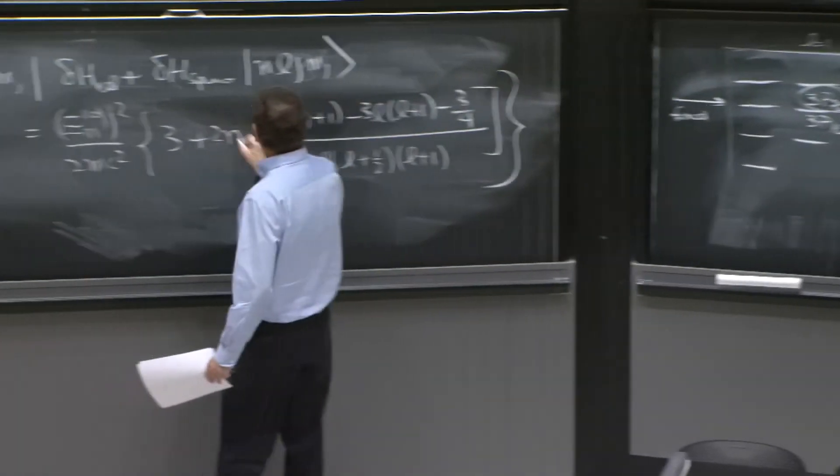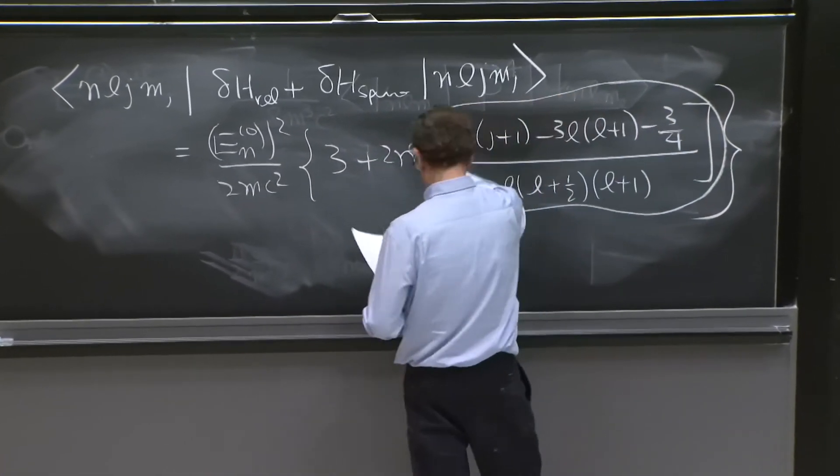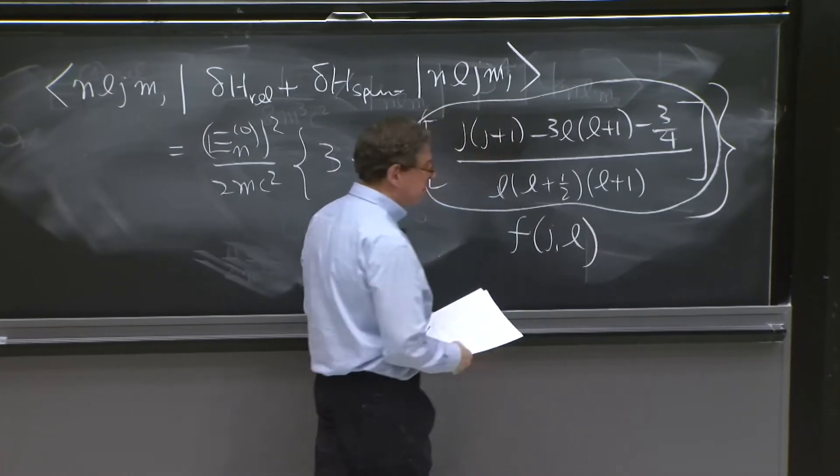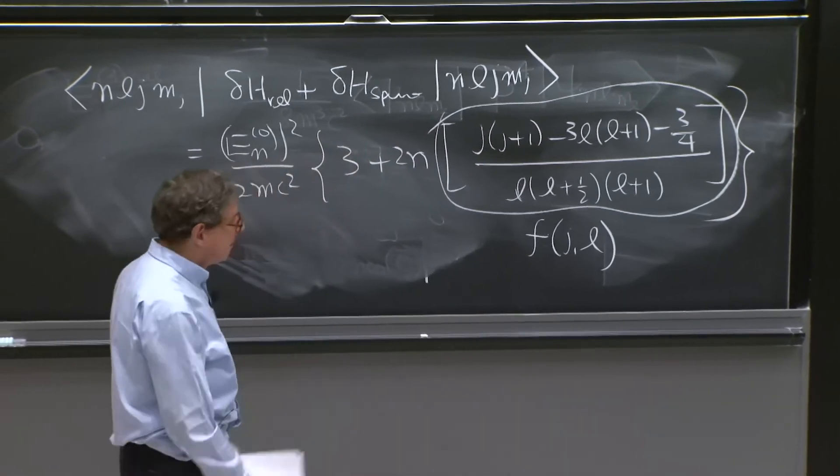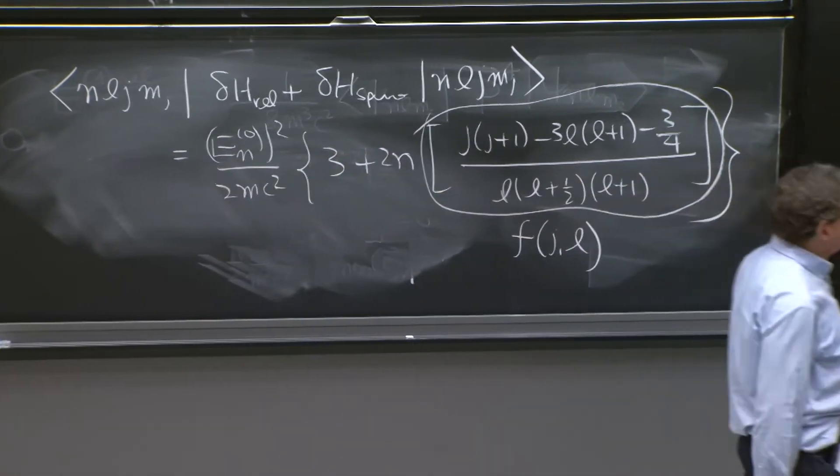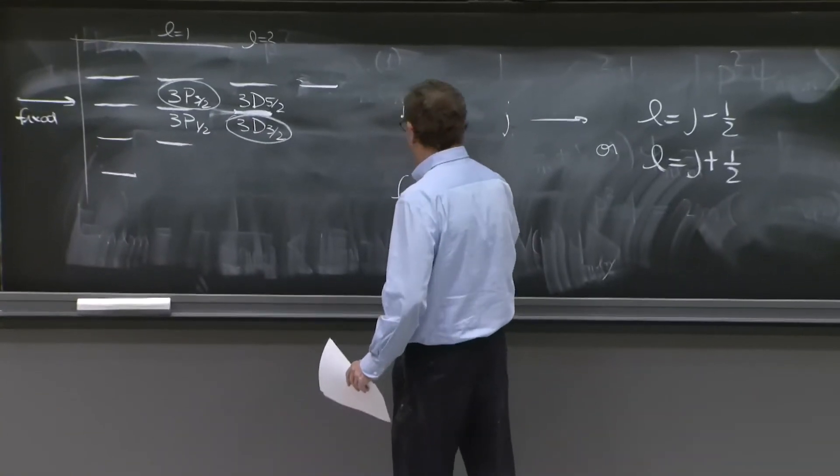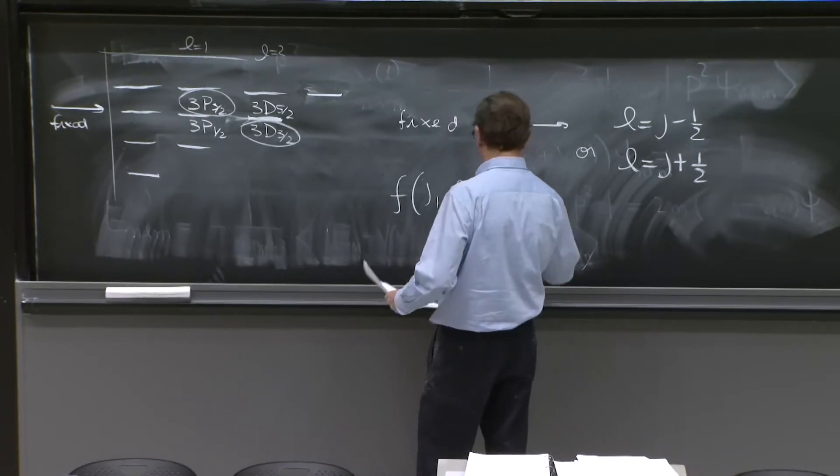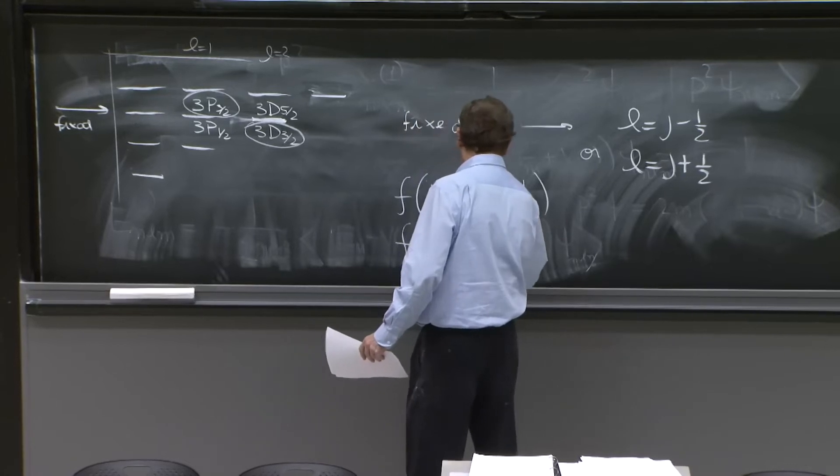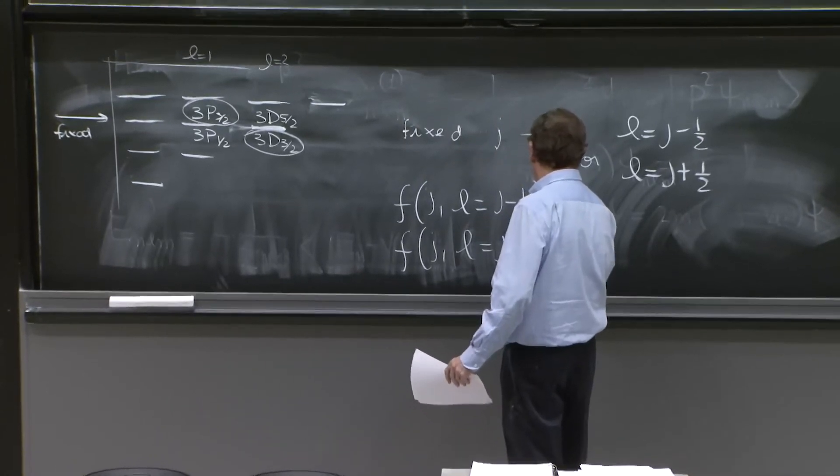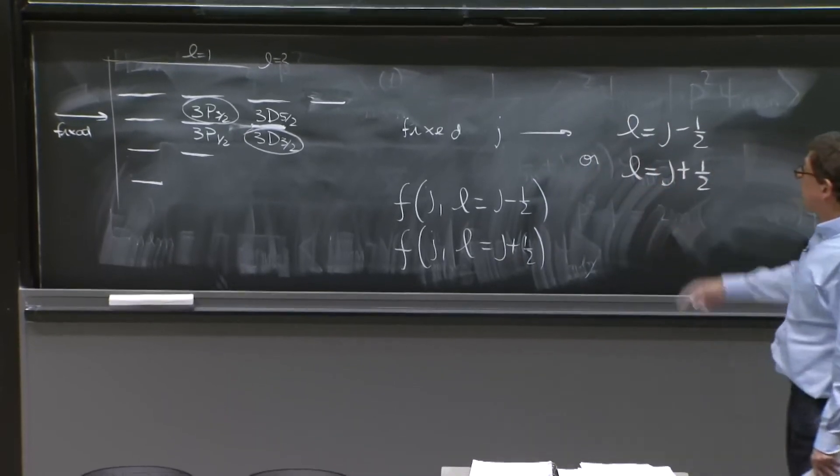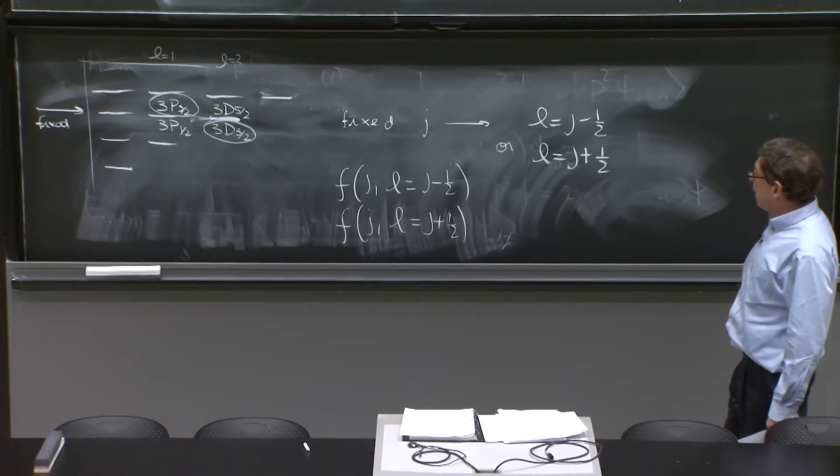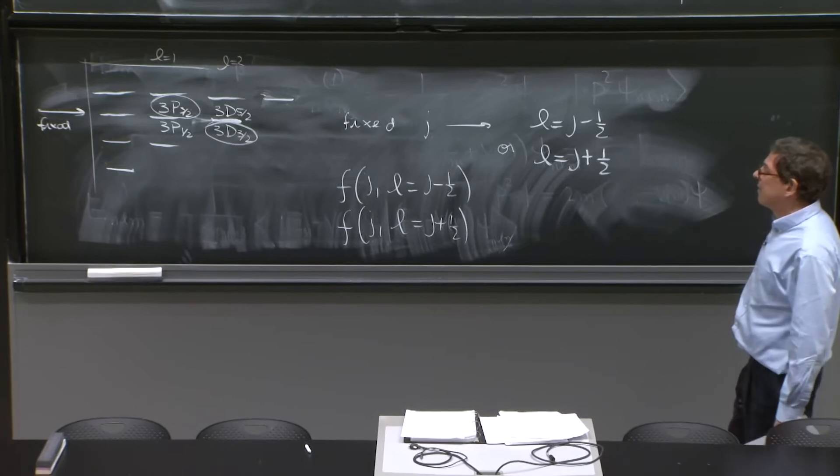Now, look at this quantity. We'll call this whole quantity f of jl. Very astonishingly, f of jl, when l is j minus 1 half, or f of jl, where l is j plus 1 half, you can calculate it. Put l equal j minus 1 half on that formula. And then put l equal j plus 1 half in that formula.